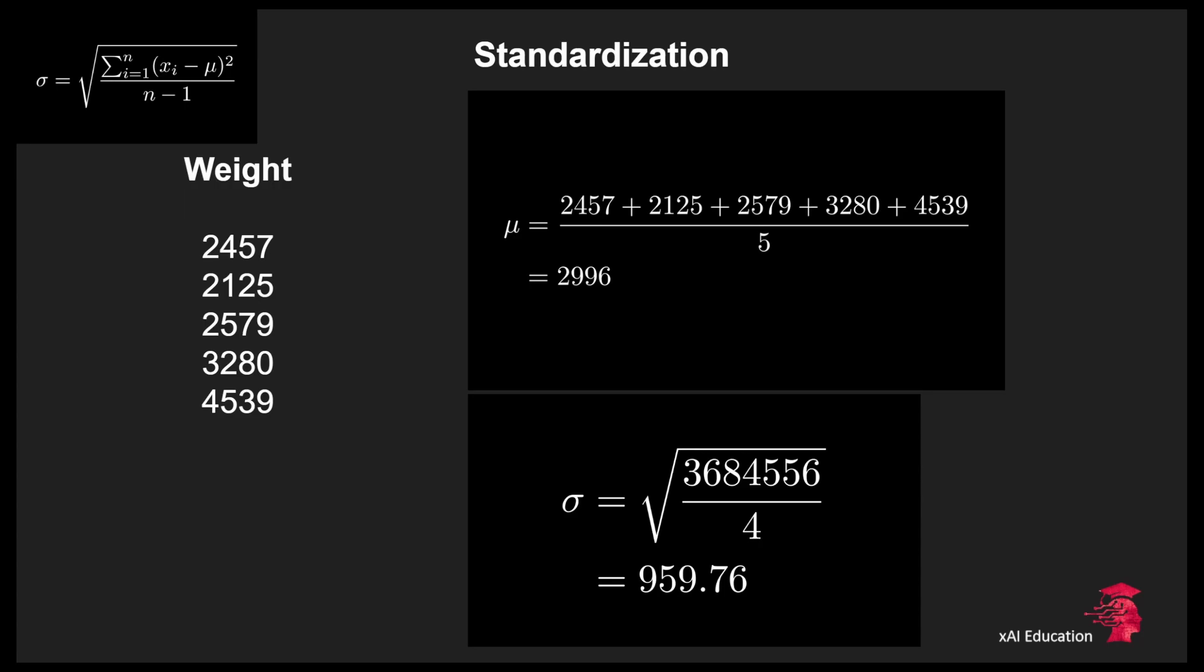We have to divide by n minus 1 instead of n as we would do when we take the average, because we don't have the whole population of data we have only a sample. And so we lose one degree of freedom since we have already used our sample data in order to compute the mean. The standard deviation will then be 959.76 rounded up to two digits.